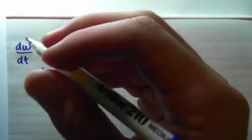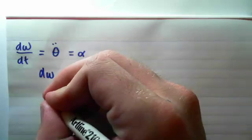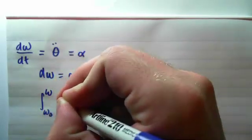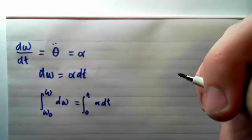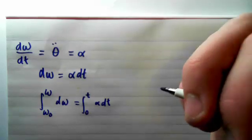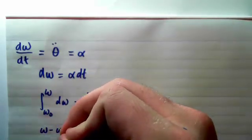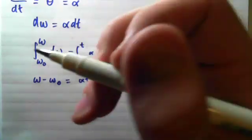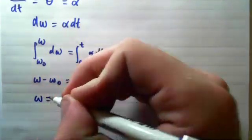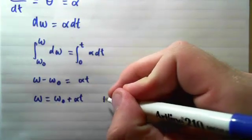If we integrate with respect to time and with respect to the change in angular velocity, assuming constant angular acceleration and that our initial time is zero, we end up with ω minus ω₀ equals αt. Making omega the subject, we get ω = ω₀ + αt. Let that be our first equation of motion.